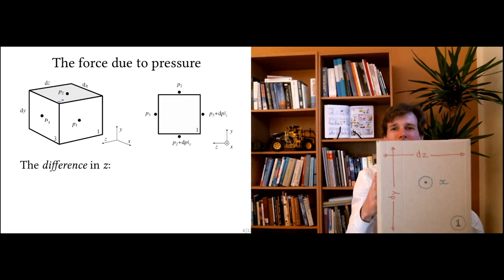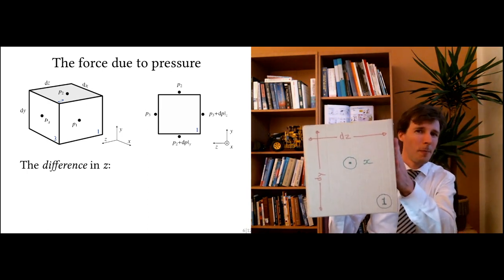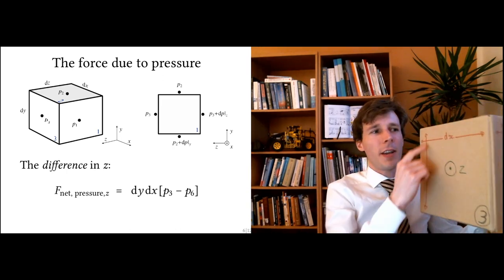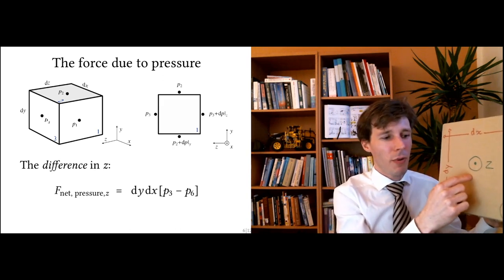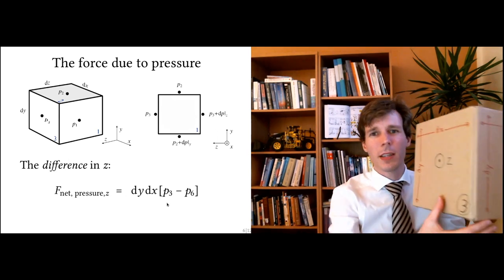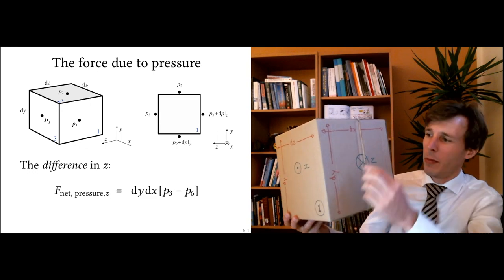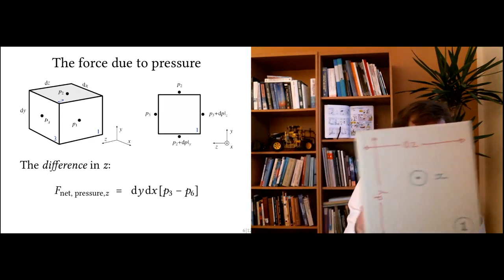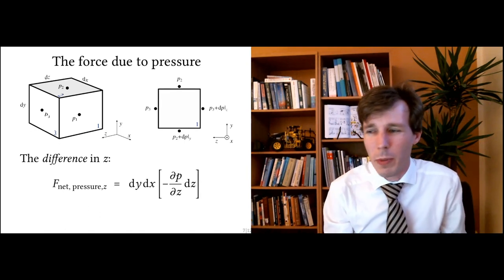To compute the force in the z direction, I take the force on one side minus the force on the other side. The area of that face is dx times dy. So I multiply that area by the pressure on side three — that gives dx·dy·p3 — and subtract the pressure acting on the other side: dx·dy·p6. This gives the net force in the lateral z direction.